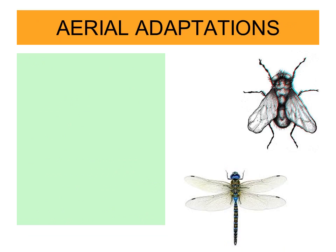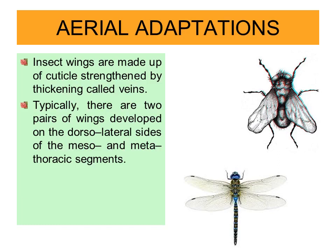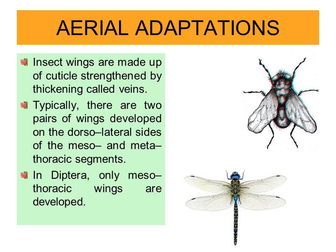The next adaptation is shown by insects. Insect wings are made up of cuticle strengthened by thickened veins. Typically, there are two pairs of wings developed on the dorsolateral sides of the meso- and metathoracic segments. In Diptera, only the mesothoracic wings are developed. These are some of the examples showing aerial adaptations — both primary and secondary — ranging from fishes to mammals.